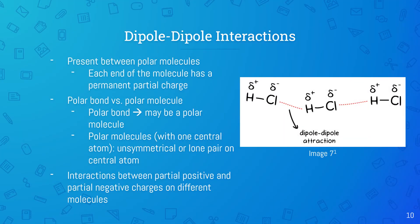Dipole-dipole interactions are present between polar molecules, which are molecules that have a permanent dipole moment. These molecules have one end that's partially negative and one end that's partially positive. It's important to know the difference between a polar bond and a polar molecule, since a molecule could have polar bonds and still be nonpolar. If a molecule has no polar bonds, then it is a nonpolar molecule. If a molecule has at least one polar bond, then it may or may not be a polar molecule.